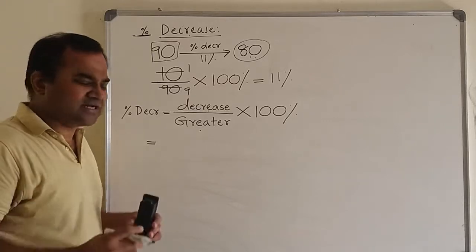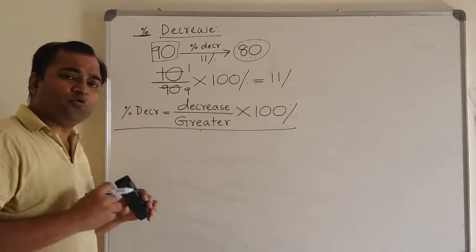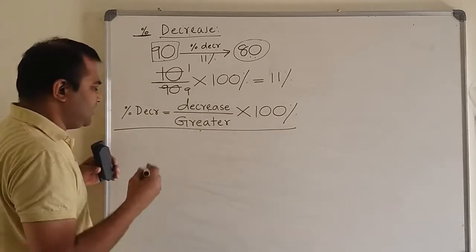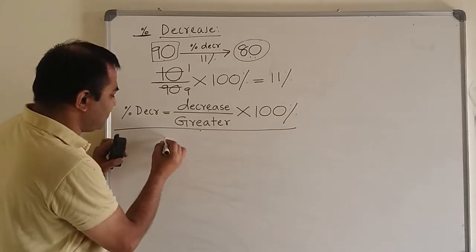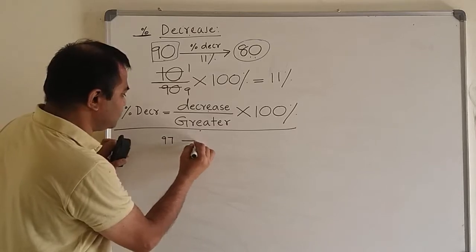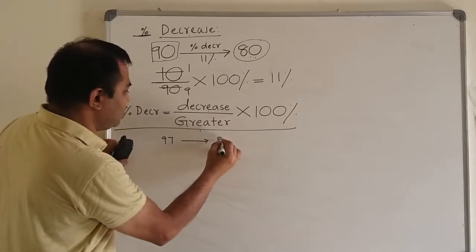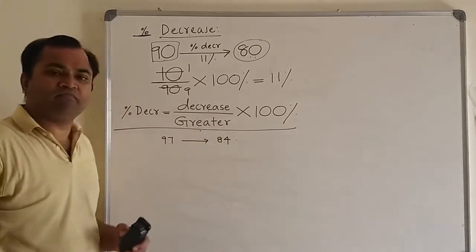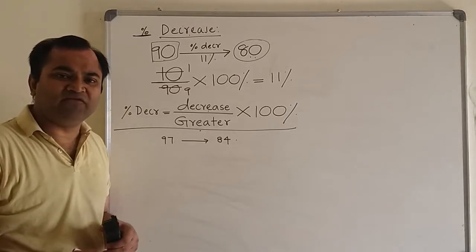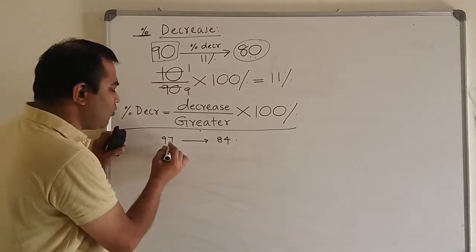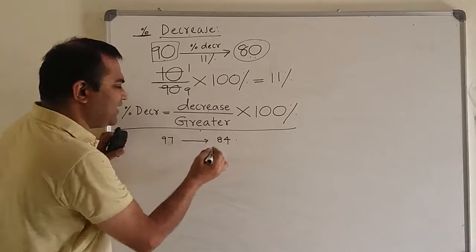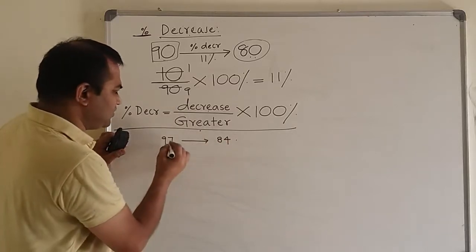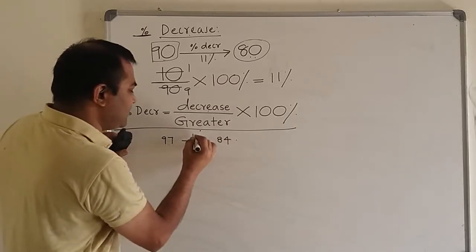Now let us consider one example - how to do approximations. Suppose the price of a book was reduced from 97 to 84. So what we do generally, we apply exact values. From 97 to 84, there is 13 decrease.